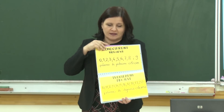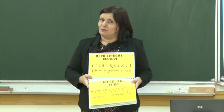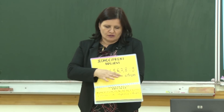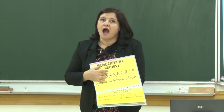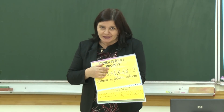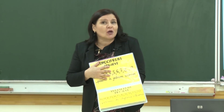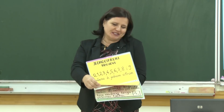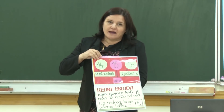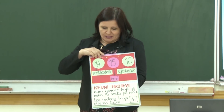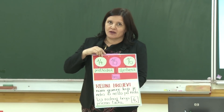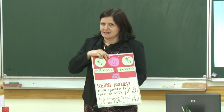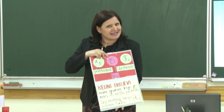Ako ih zapisujemo sa dvije cifre, to su nam dvocifreni brojevi. Učili smo do 20, a onda smo pred kraj učili do 100. Brojevnu liniju smo radili i znamo brojati do 100. Radili smo koji je broj prethodnik, koji je sljedbenik nekog broja. Ovdje vidimo broj 15 — koji je sljedbenik? 16. Koji je prethodnik? 14. Bravo!